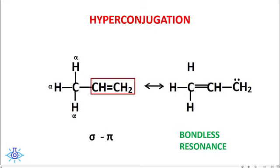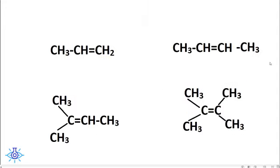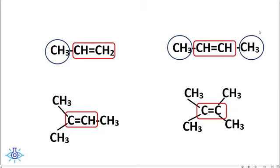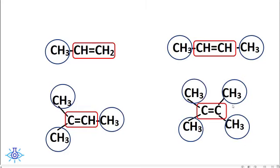Let us apply hyper conjugation to a set of alkenes. In CH₂=CH₂, there is one double bond. In CH₃-CH=CH₂, we find one alpha carbon on one side. In CH₃-CH=CH-CH₃, there are two alpha carbons on either side of the double bond. Around the double bond in the third compound there are three alpha carbons, and in the fourth compound there are four alpha carbons.